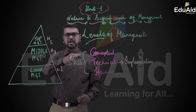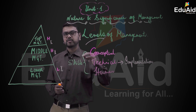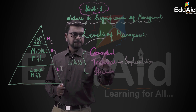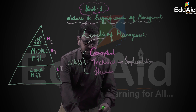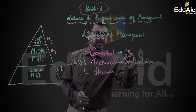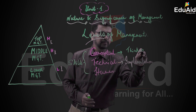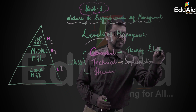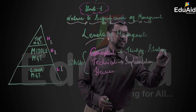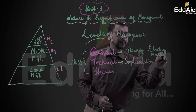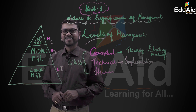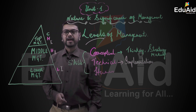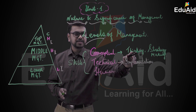There are different charts for this that we'll deal with later in the chapters. Conceptual skills is actually a thinking function — it is about thinking, strategizing, and strategy-making. As you can guess, this is highest at the top level management. They define the strategy and think about what needs to be done.